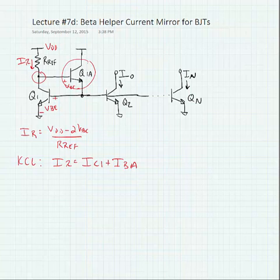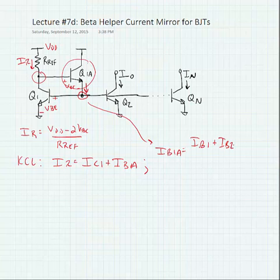Now IB1A goes through the transistor and gets multiplied by its beta plus one. If we do KCL at this node we see IB1A is equal to IB1 plus IB2 plus everything up to IBN divided by beta plus one.